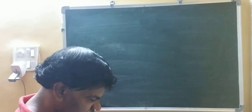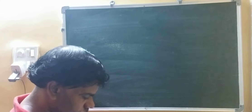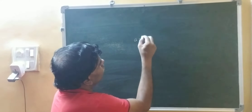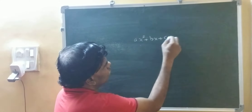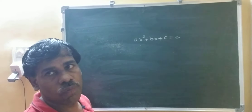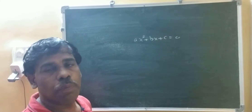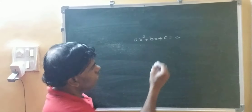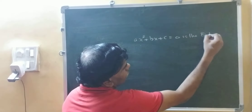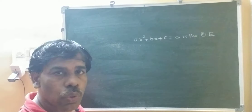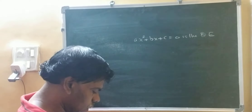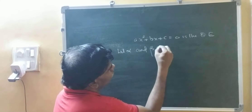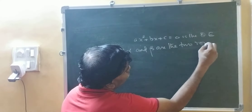Now listen very carefully. For any quadratic equation ax squared plus bx plus c equals 0, you always have two values of x, meaning you have two roots. For example, for a quadratic equation we have got two roots which we do not know — we call them alpha and beta.